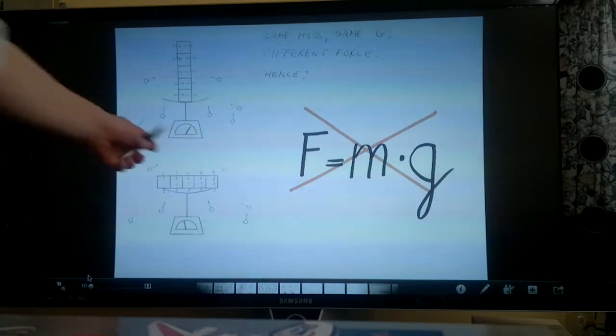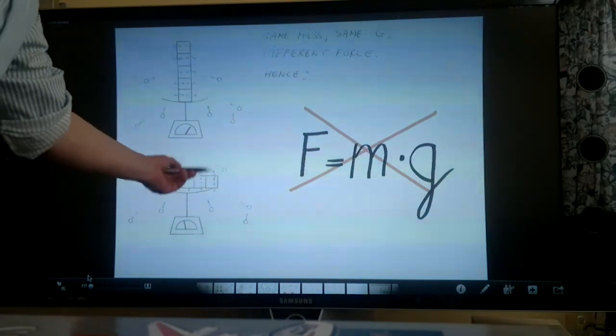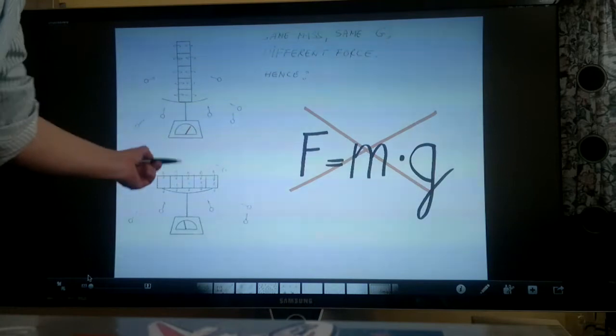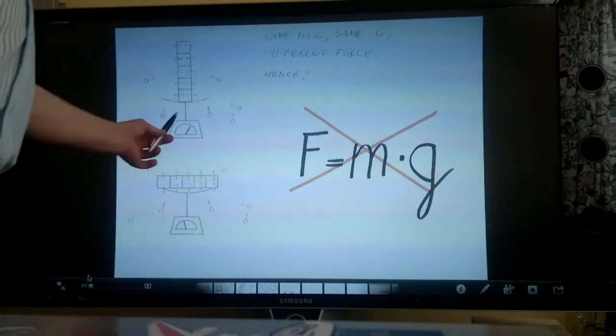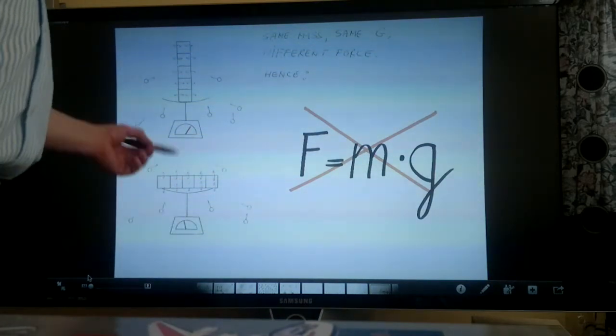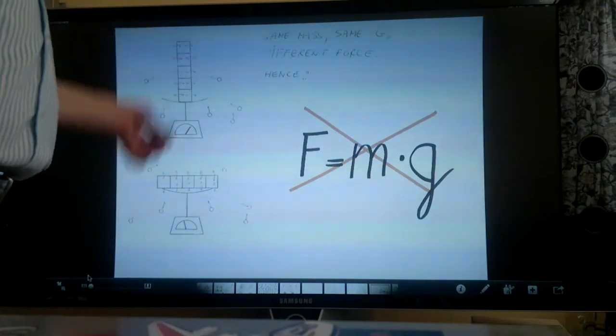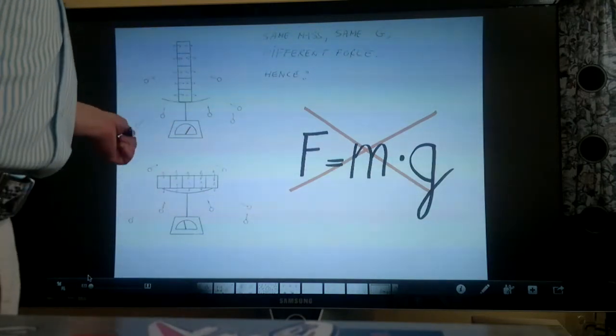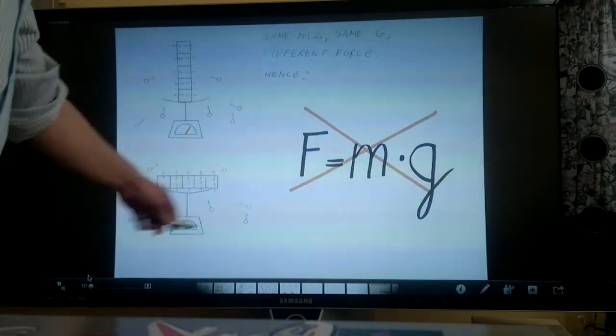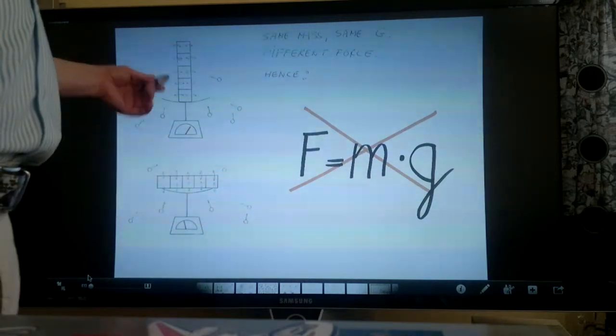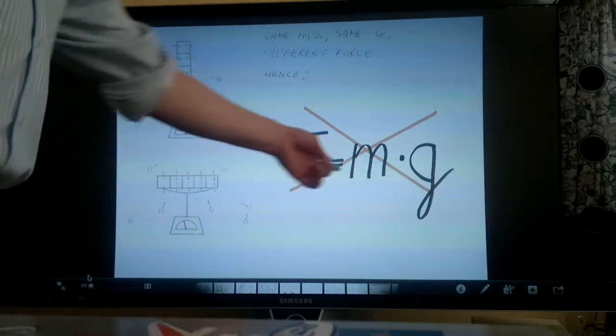This one has the 90 degree difference, the rotation. So this one is lighter. And that's strange, because it's the same mass, the same gravitational field, same place on the planet, yet the forces are different. So this is not true.